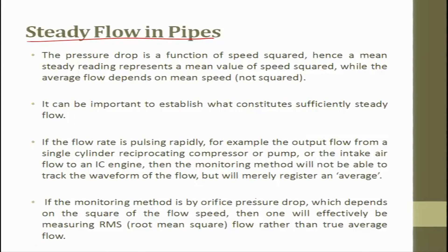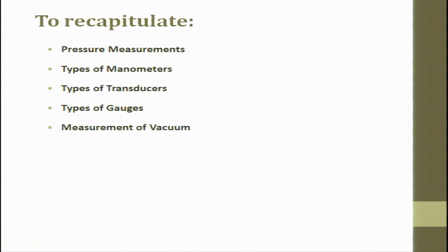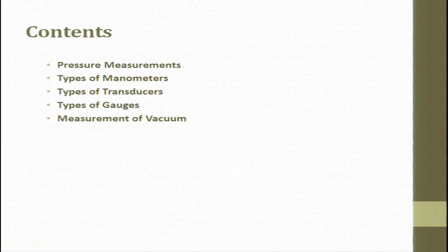Steady flow in a pipe is a very common experiment in fluid mechanics. The pressure drop is a function of speed squared; hence a mean steady reading represents a mean value of speed squared, while average flow depends on mean speed, not squared. To recapitulate, this lecture covered pressure measurement, types of manometers, types of transducers, types of gauges, and measurement of vacuum, with an introduction to flow measurement.